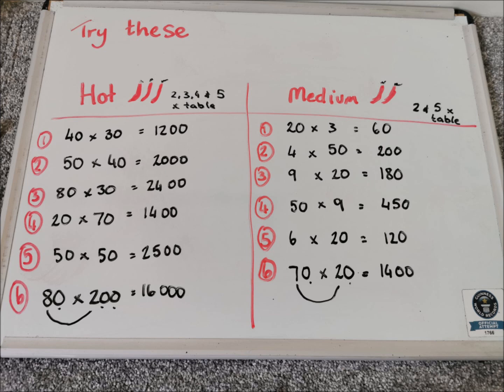Times those together, we get 16. There were three zeros in the question. So I need to put three zeros in my answer. So the answer was 16,000 for that one. So hopefully that one didn't catch you out too much and you were able to work through that puzzle.